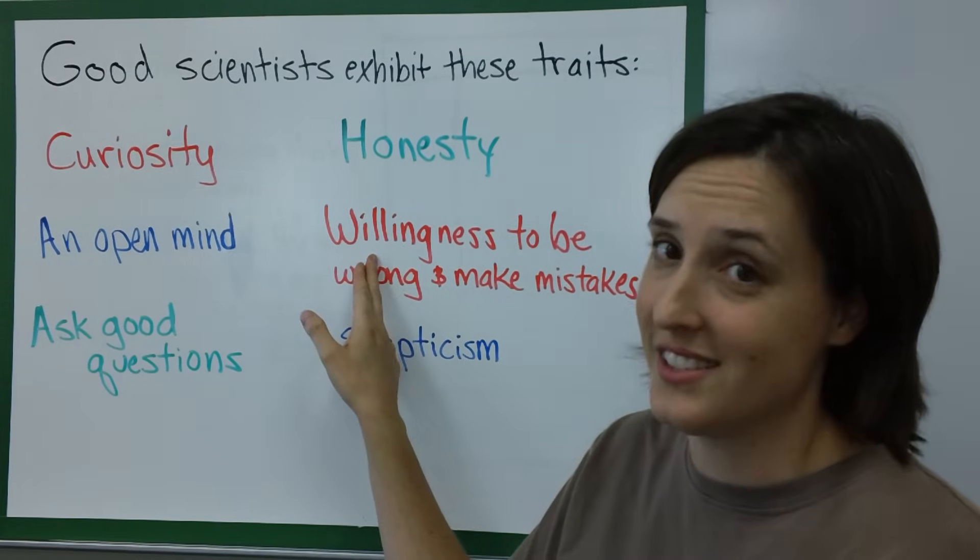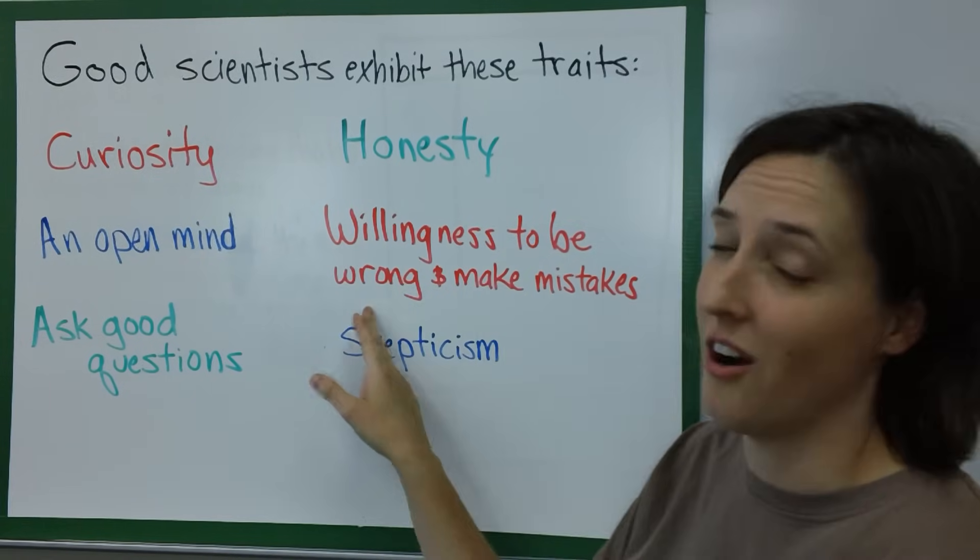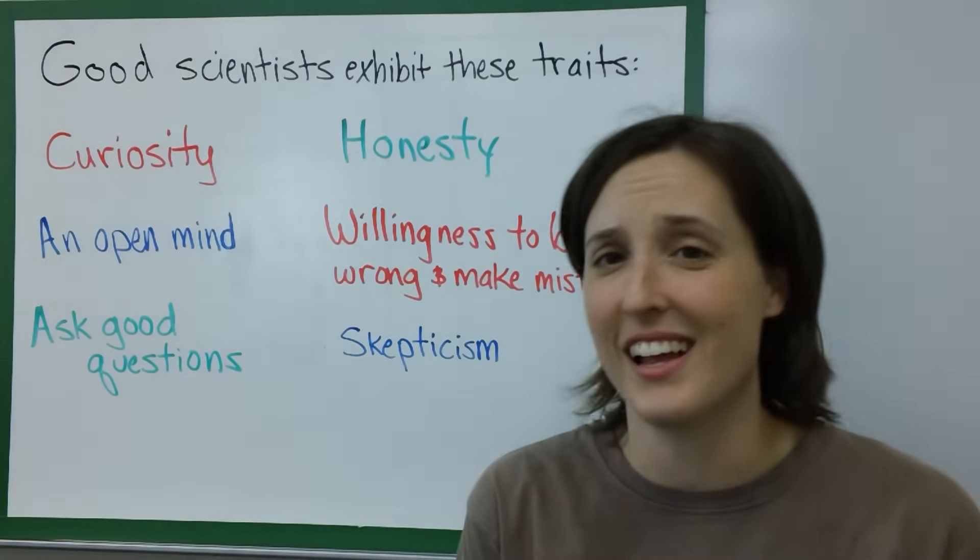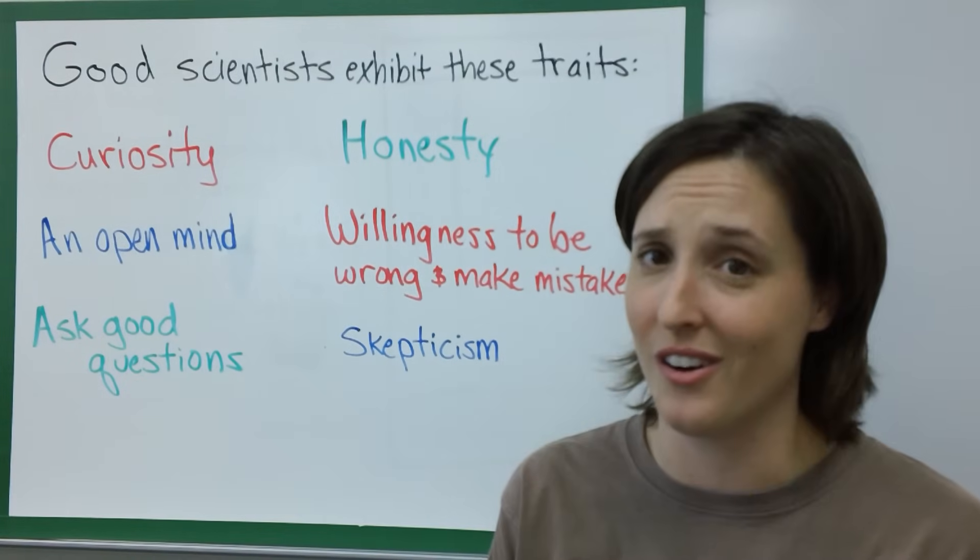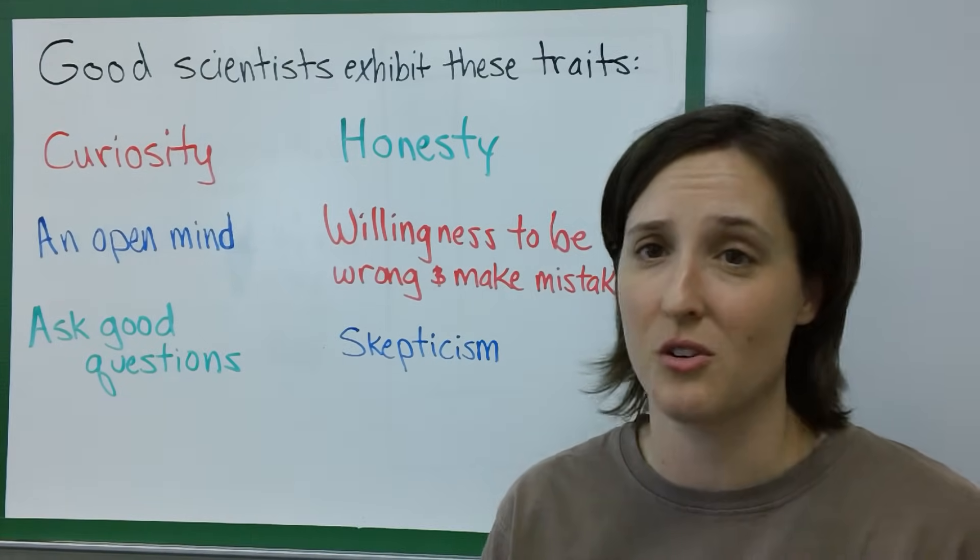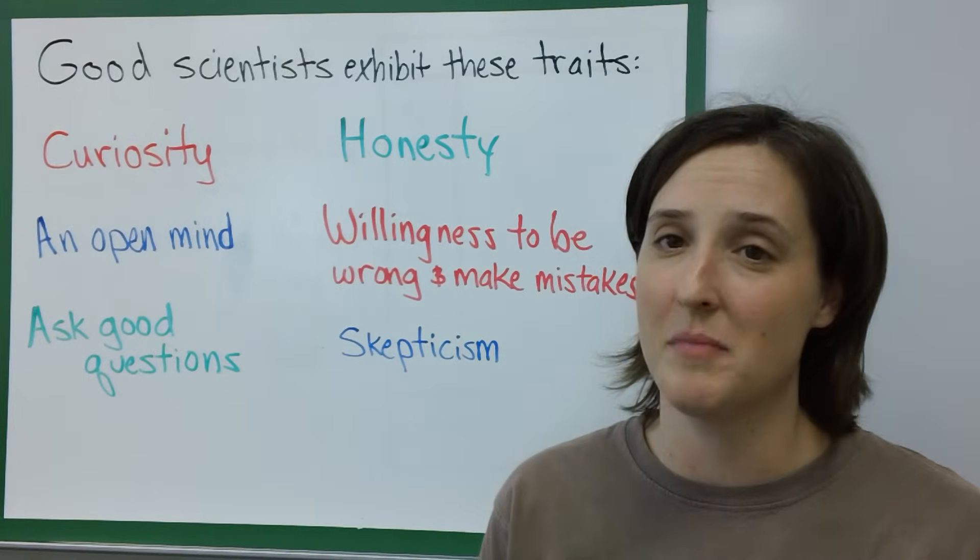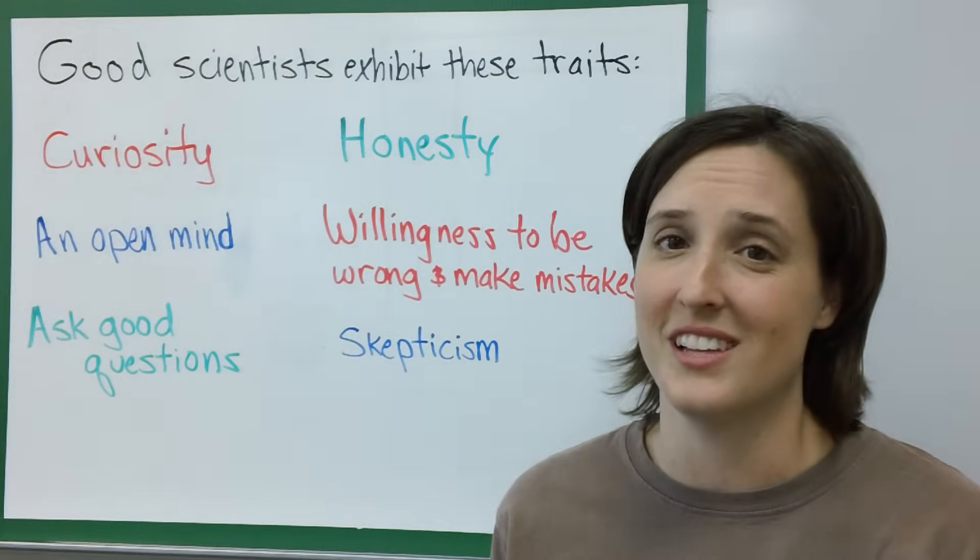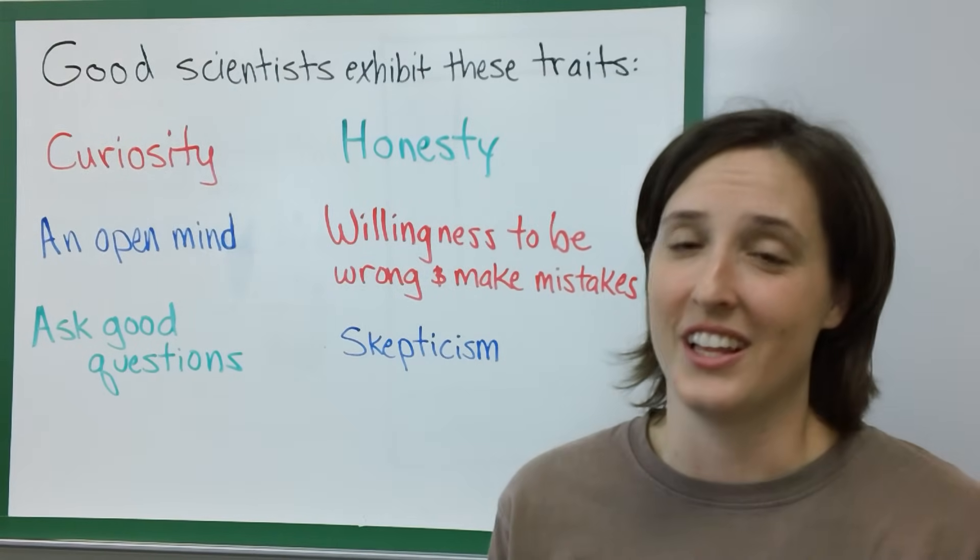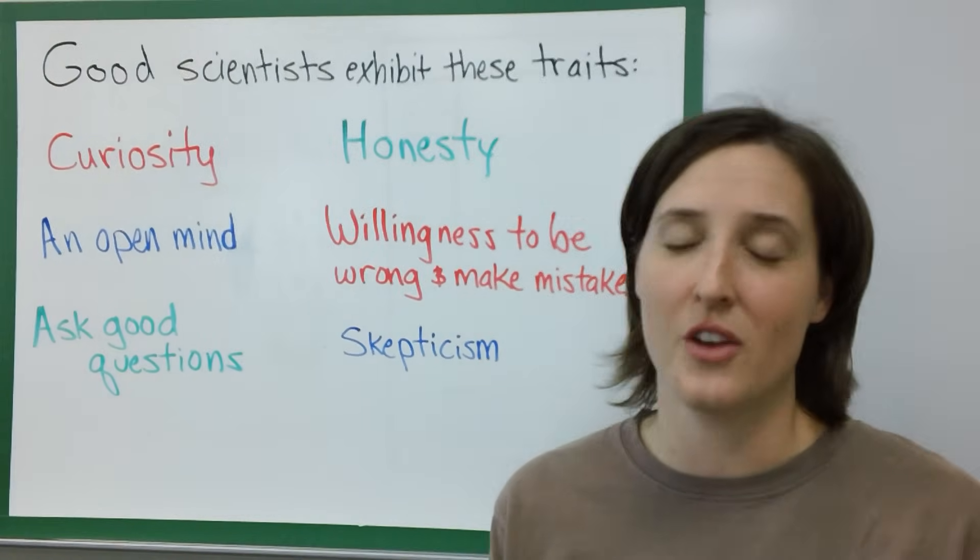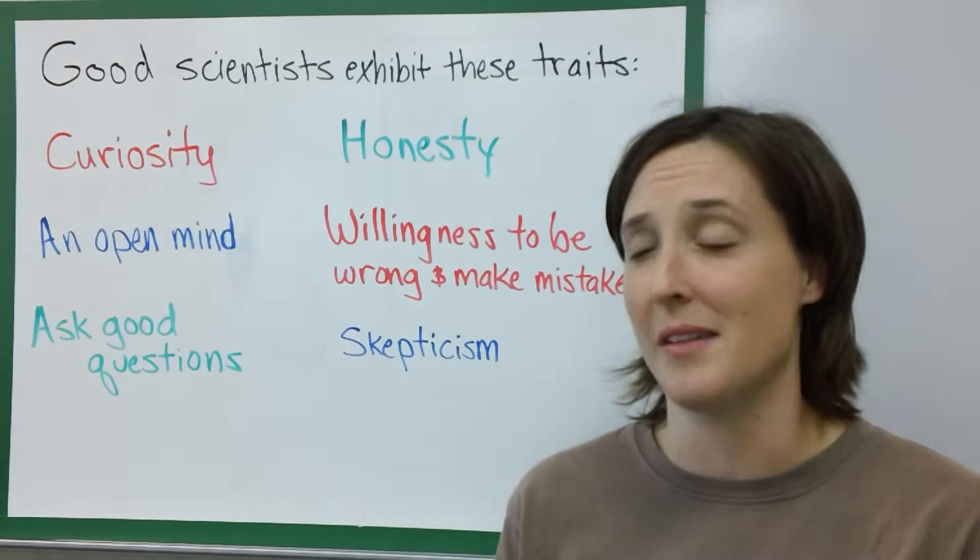Another really important quality scientists have is a willingness to be wrong and to make mistakes. Yes, science isn't perfect. Scientists are not perfect. They do make mistakes and they can be wrong. So it's important when you're doing your experiments in the lab, if you end up getting an answer that makes absolutely no sense, it's okay. Even the best scientists make mistakes occasionally. And what we'll do is we'll be able to figure out together what went wrong and what you can do to fix it.